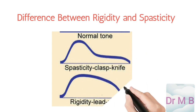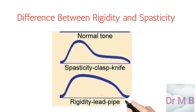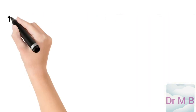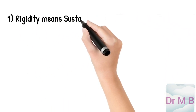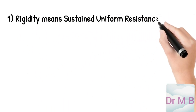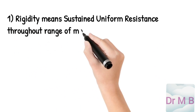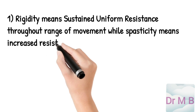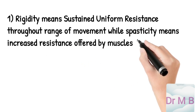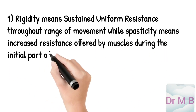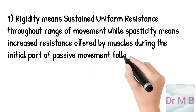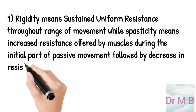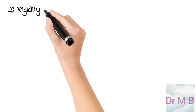Tone can also be hypertonia, meaning increased tone. There are two types of hypertonia: one is rigidity and second is spasticity. Now I will tell you the differences between rigidity and spasticity. Rigidity means sustained uniform resistance throughout range of movement, while spasticity means increased resistance offered by muscles during the initial part of passive movement followed by decrease in resistance.